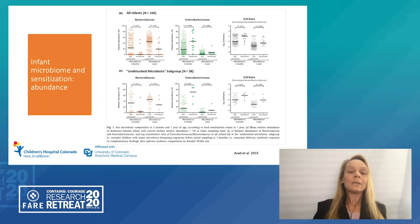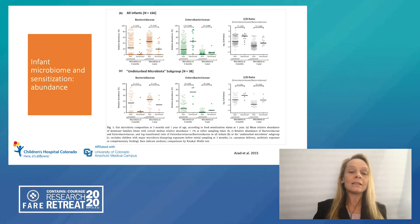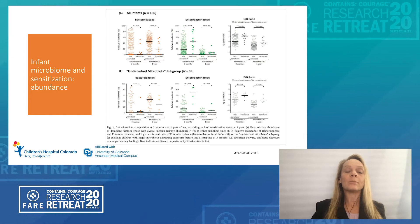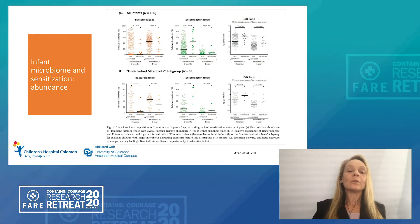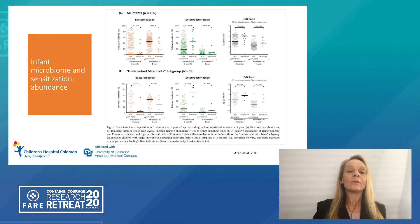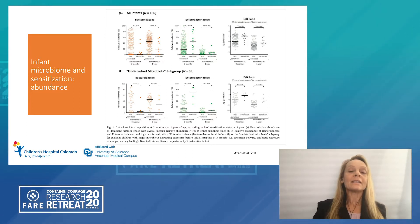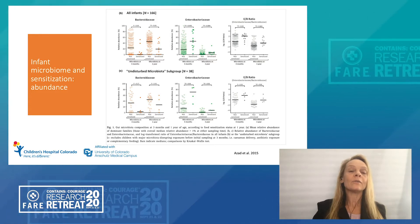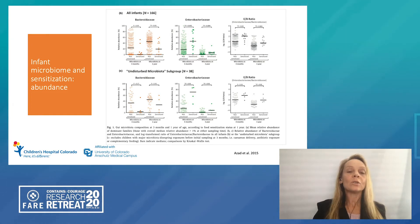If we look at the different species, whether we look at all infants or infants with an undisturbed microbiome — so children not born by C-section, not introduced to solid food early, and not recently treated with antibiotics — we could still see some difference in the relative abundance of the Bacteroidaceae and the Enterobacteria. In the top line where all children were included, there is a very clear difference in the relative abundance of Bacteroidaceae in non-sensitized versus sensitized children, present at three months and one year of age, though numbers were small with only 12 sensitized children.